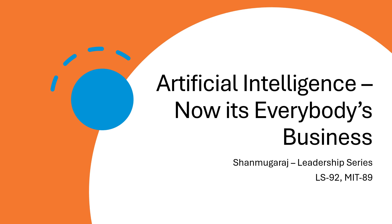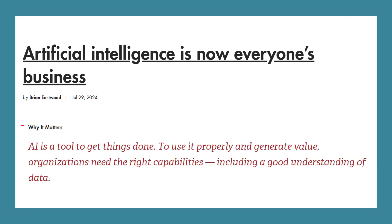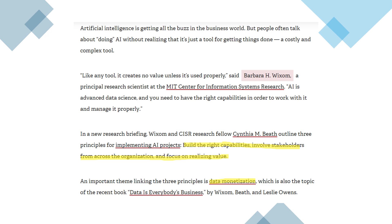We're currently discussing some leadership ideas from MIT Sloan's management review. Today's topic is 'Artificial Intelligence — Now It's Everybody's Business,' an article published on July 29th. The key point: AI is a tool to get things done. To use it properly and generate value, organizations need the right capabilities, including a good understanding of data. AI is getting all the buzz in the business world, but it's a costly and complex tool that creates no value unless used properly.